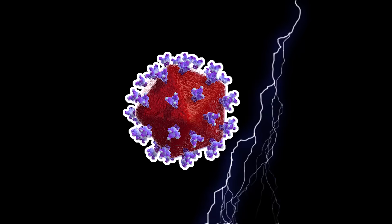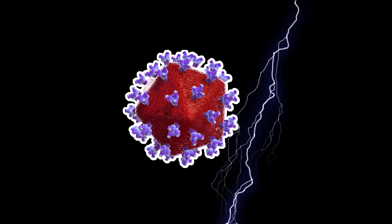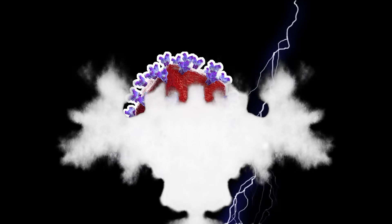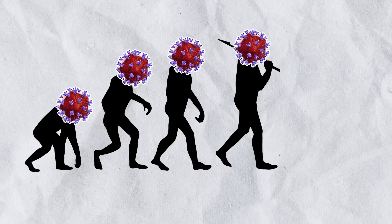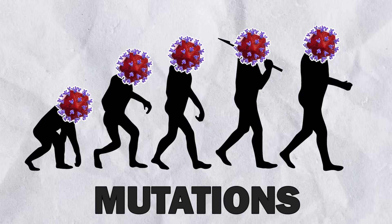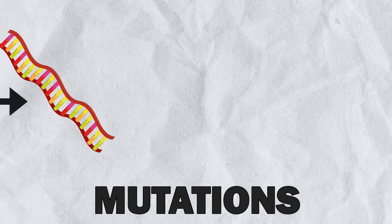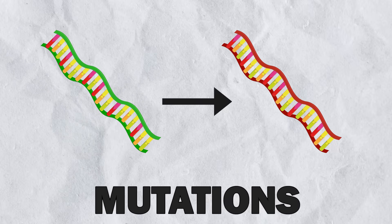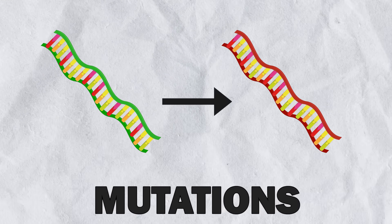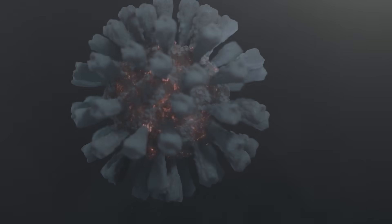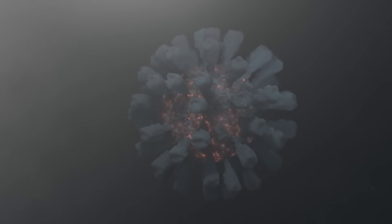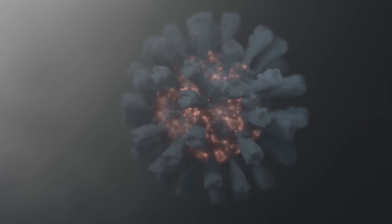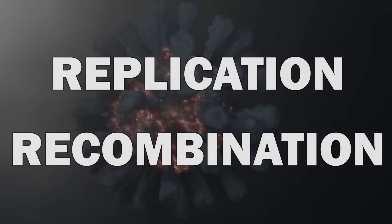The years HIV can spend inside a patient's body also means it has a lot of time to evolve. HIV primarily evolves through mutations — changes to its genetic information. There are two ways HIV can evolve and change its genetic sequence: replication and recombination.